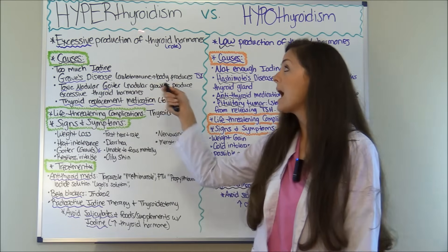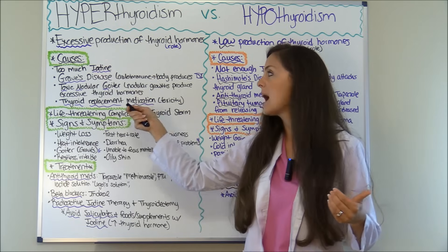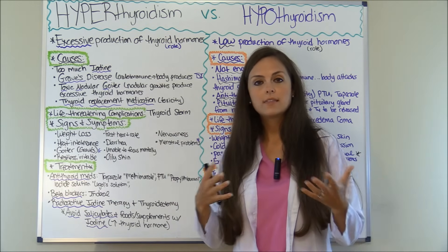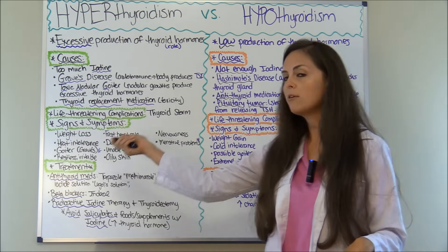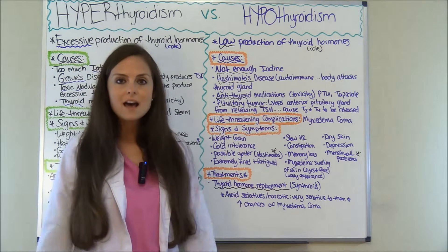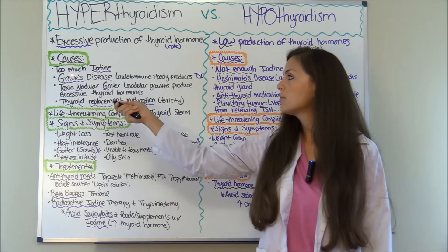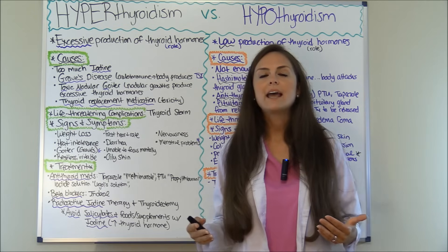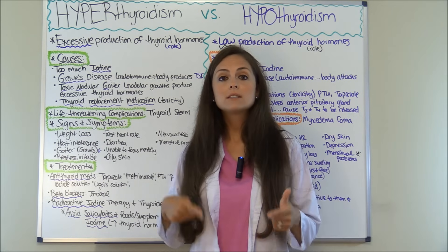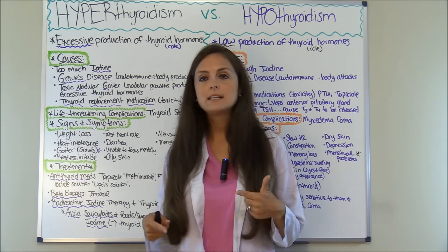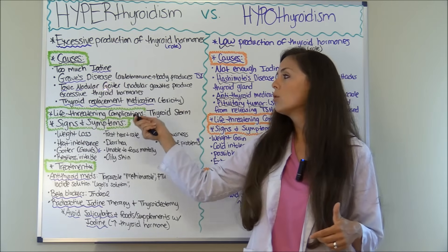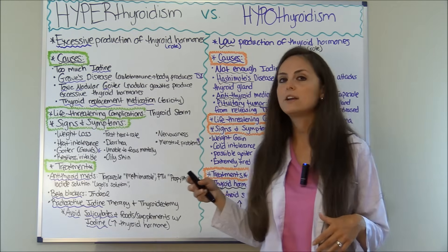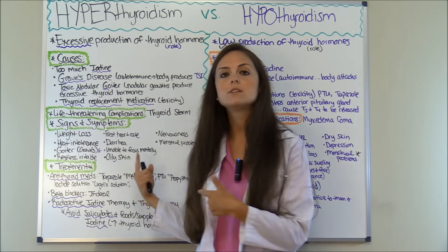What causes these conditions? In hyperthyroidism, one cause can be eating too much iodine. Iodine plays a role in T3 and T4 production — your thyroid takes iodine and produces T3 and T4. Another cause is Graves' disease, an autoimmune condition where the body produces TSI, thyroid stimulating immunoglobulin, which acts like TSH and constantly tells the thyroid gland to produce T3 and T4. Another cause is toxic nodular goiter, also known as TNG, where nodular growths produce excessive thyroid hormones. Also, taking too much thyroid replacement medication like Synthroid can cause toxicity and flip you into hyperthyroidism.